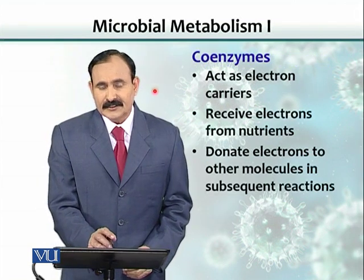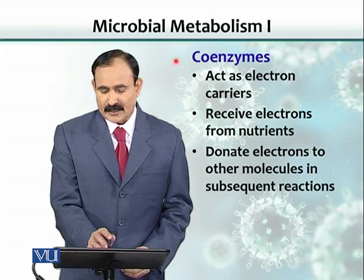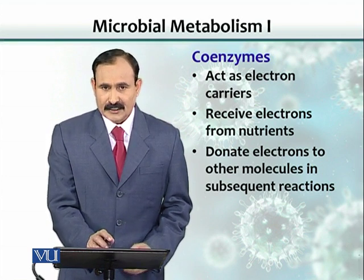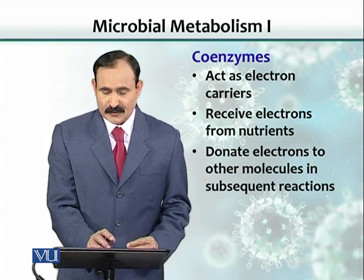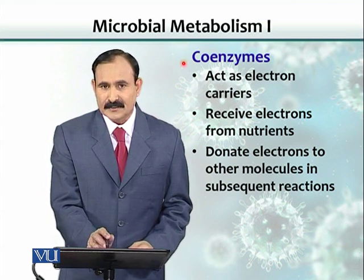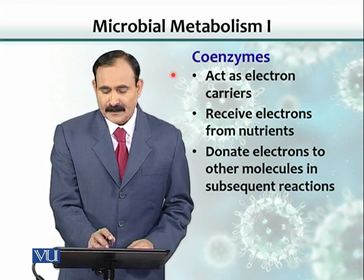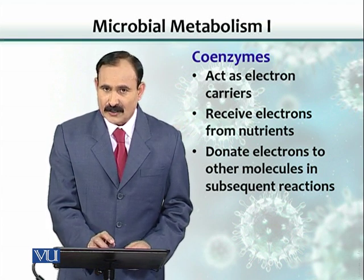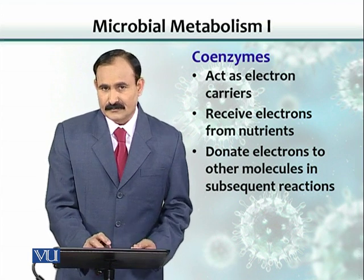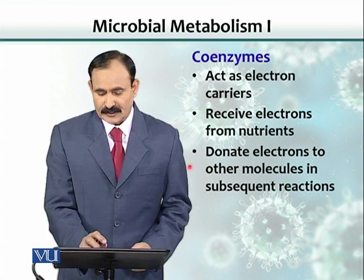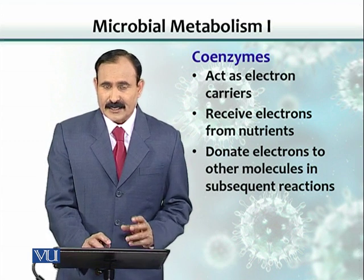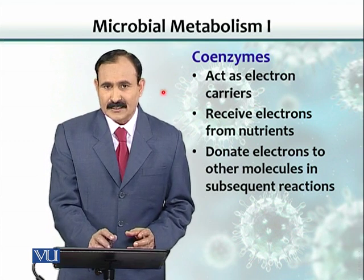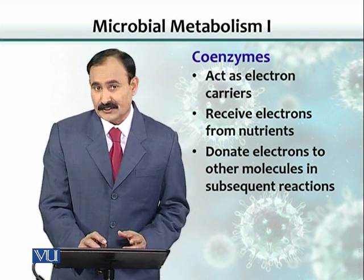There are substances called coenzymes that act as electron carriers. Electrons derived from various nutrients are temporarily captured by these coenzymes, which then pass them on to other molecules. During this process of electron transfer — from nutrients to coenzymes and onward — ATP is generated.